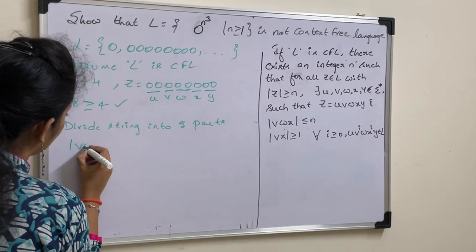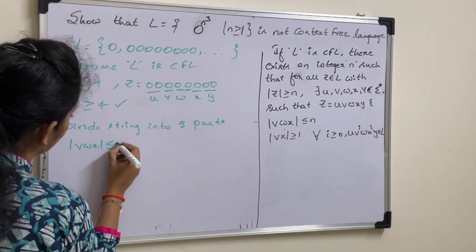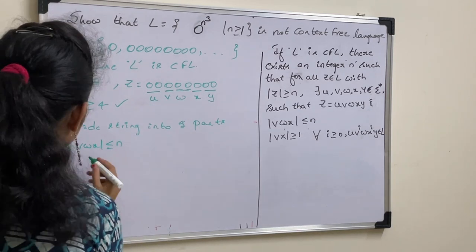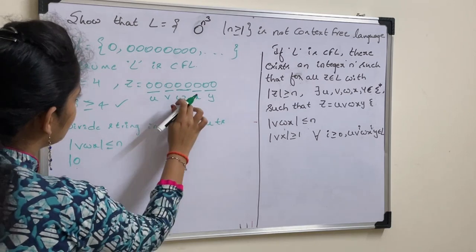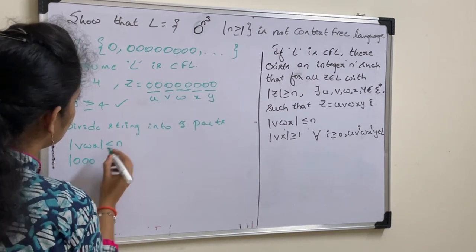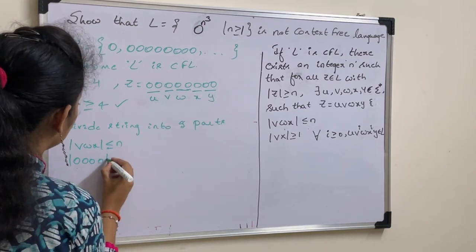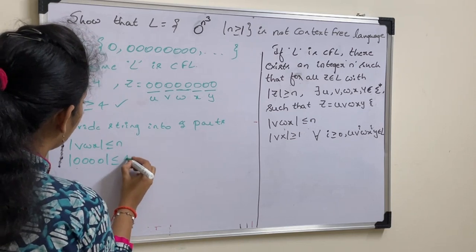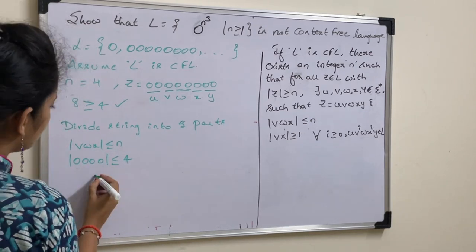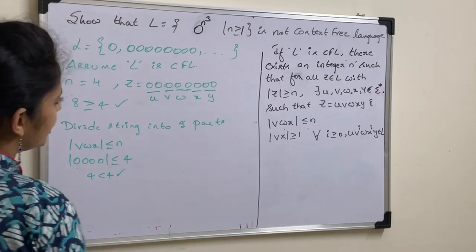Check mod v, w, x less than or equal to n. What is v? 0. W is 0, 0. X is 0. Less than or equal to n value 4. 4 less than or equal to 4. Condition true. Next.